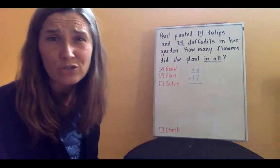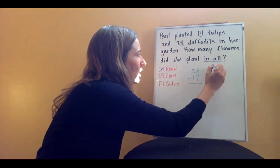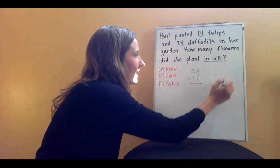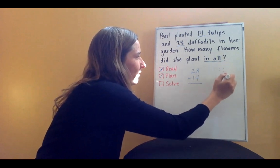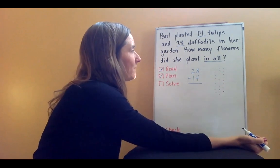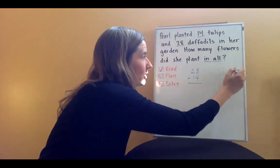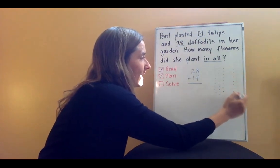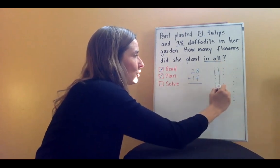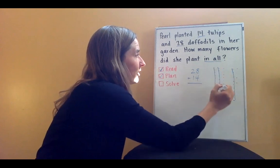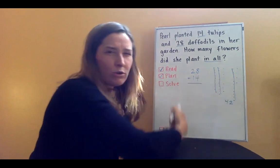So I am going to take 28 plus 14 and find the sum. The other thing I could do is I could draw some pictures, right? So I could do 28 flowers and I'm going to count them out. There are my daffodils for 28. Now 14 tulips. I'm going to count those out too. So I have 10, 20, 30. Here was 38, 39, 40, 41, 42. So I'm thinking there might be about 42 flowers.